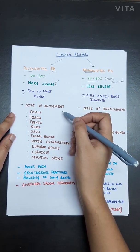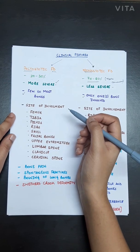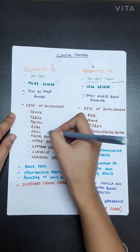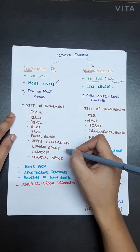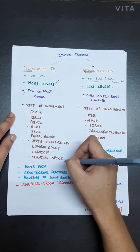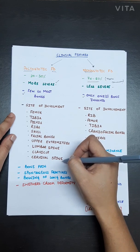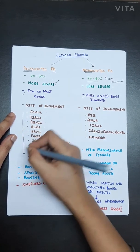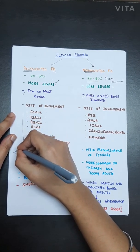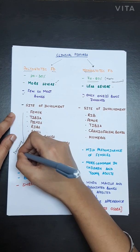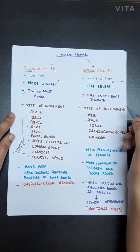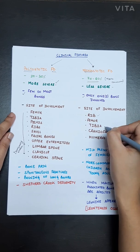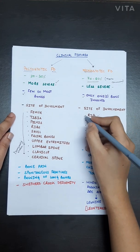In polyostotic fibrous dysplasia, the sites of involvement in decreasing order of frequency are: femur, tibia, pelvis, ribs, skull, facial bones, upper extremities, lumbar spine, clavicle, and cervical spine. In monoostotic fibrous dysplasia, the sites of involvement in decreasing order are: ribs, femur, tibia, craniofacial bones, and humerus.